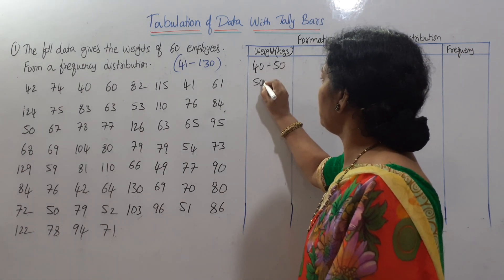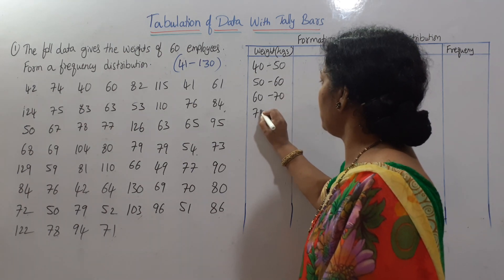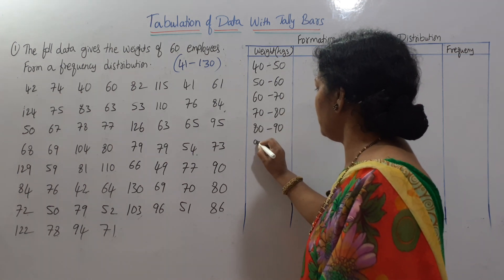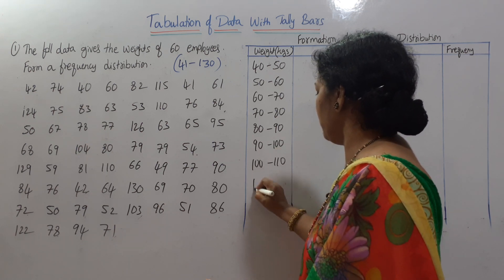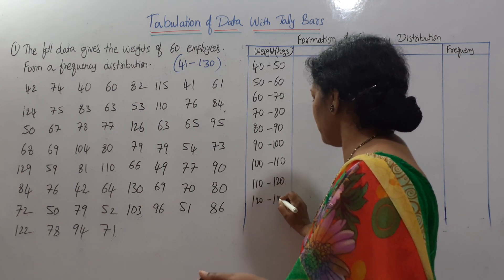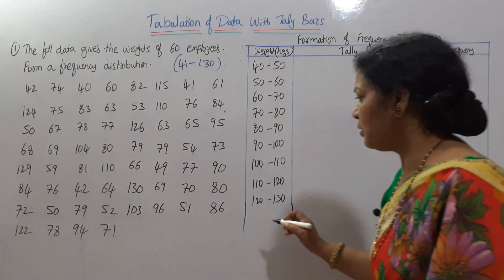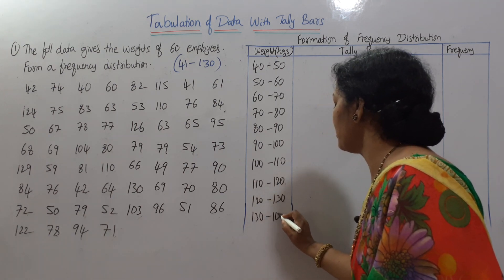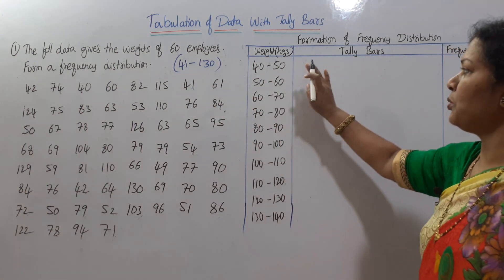The class intervals are: 40–50, 50–60, 60–70, 70–80, 80–90, 90–100, 100–110, 110–120, 120–130. And we can extend to 130–140 to cover the maximum value.